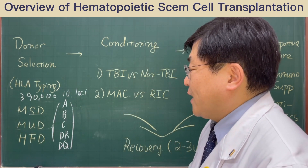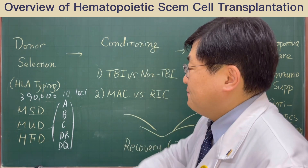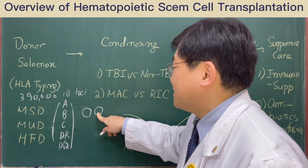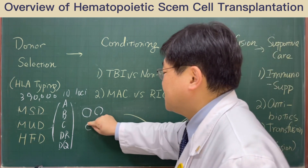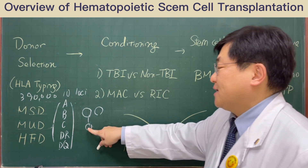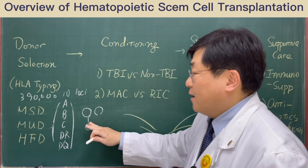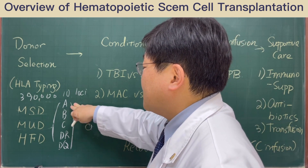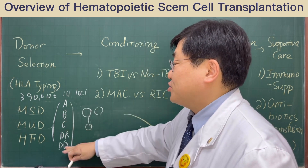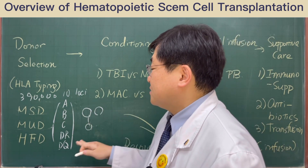Alternatively, we can use the half-identical family mismatched donor, which means that if a parent has some kind of blood disease, his daughter or son can donate their stem cell to their parent, or vice versa. Or if a sibling has a half-identical matched HLA, that sibling can donate their stem cell to the patient.